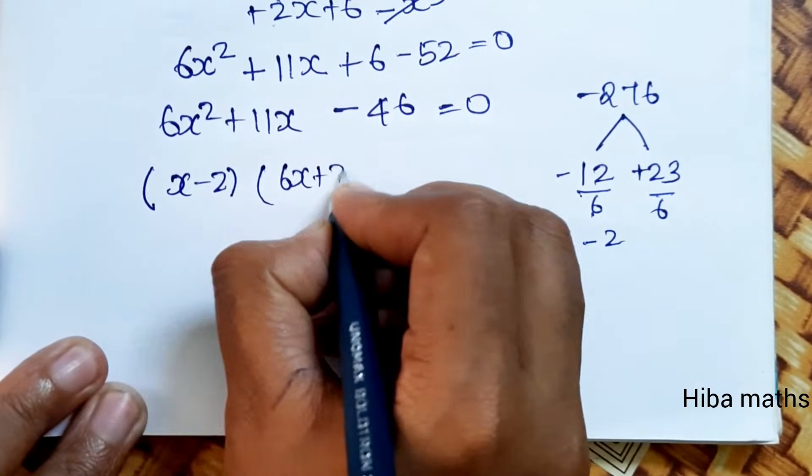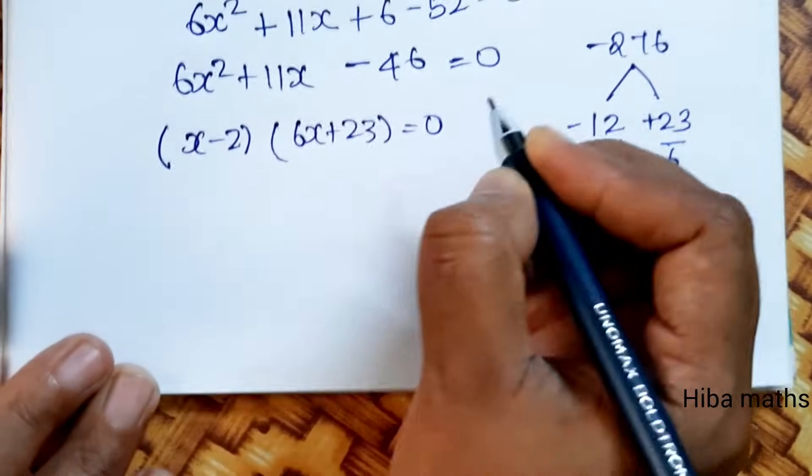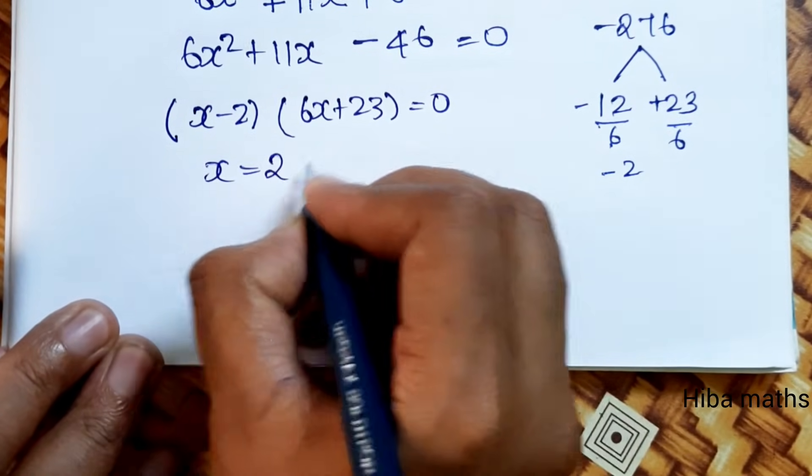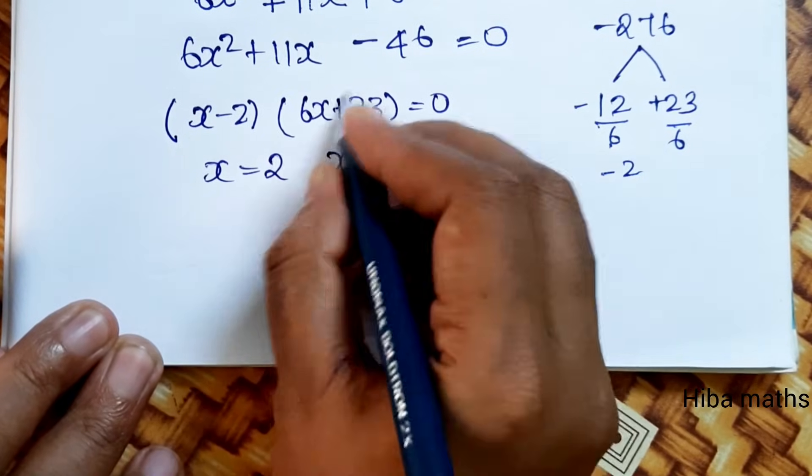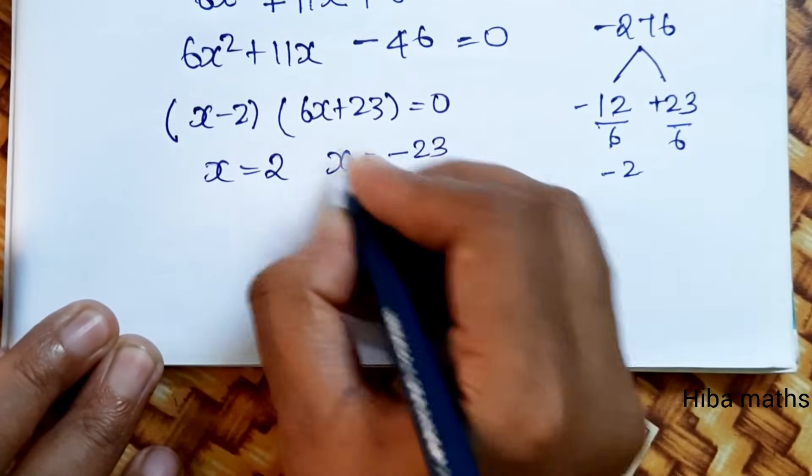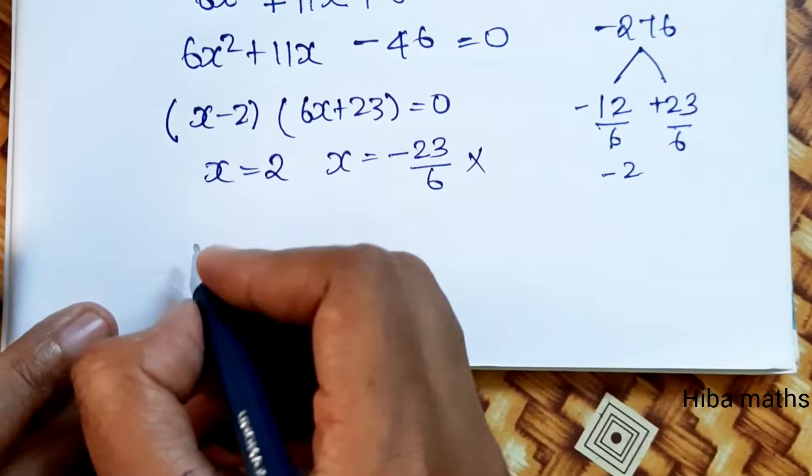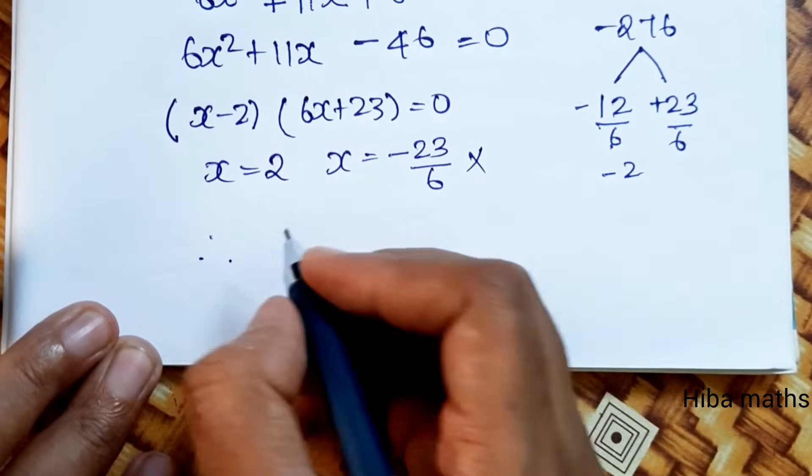So I have factored it. x minus 2 times 6x plus 23 equals 0. x equals 2 or x equals minus 23 divided by 6. Negative term is not possible, therefore x equals 2.